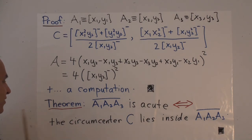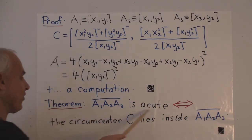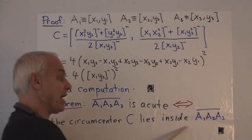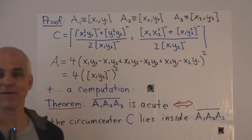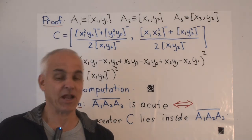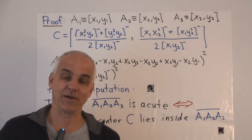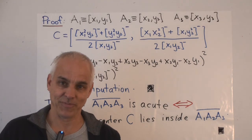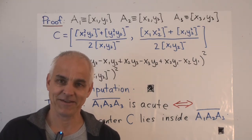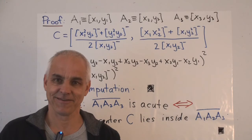To restate the key consequence: the triangle is acute precisely when the circumcenter C lies inside or on the triangle. Next time we're going to have a look at the proofs of the triangle spread rules — I hope you'll join me for that. I'm Norman Wahlberger, thanks for listening.